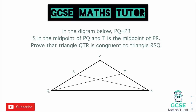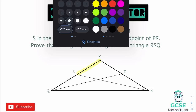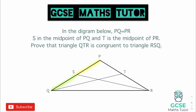Now we have a slightly different question with overlapping triangles. It says PQ equals PR, so we know this is an isosceles triangle. S is the midpoint of PQ, meaning the two halves of PQ equal the corresponding halves. The question asks us to prove that triangle QTR is congruent to triangle RSQ.